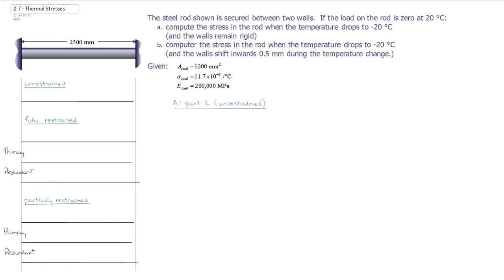In this question we're going to look at a steel rod, shown here, fully restrained between two walls. In this case, the load on the rod is zero at 20 degrees Celsius. What we want to do is compute the stress on the rod when the temperature drops to minus 20 degrees Celsius, or a change of minus 40 degrees Celsius, and the two supports remaining rigid.